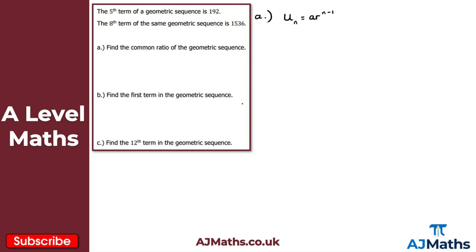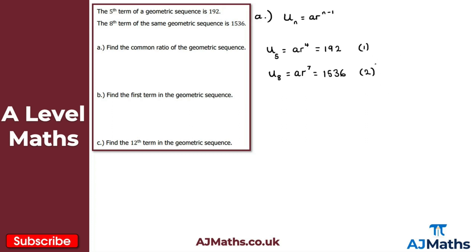The fifth term u₅ = ar⁴ = 192 — that's equation one. The eighth term u₈ = ar⁷ = 1536 — that's equation two. What we've got now is a pair of simultaneous equations. To solve for r, I'll take equation two and divide it by equation one.